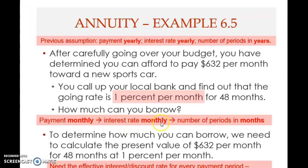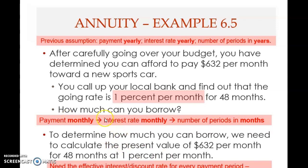The formula we have seen can be applied as long as the three elements — payment, interest rate, and number of periods — are all consistent. They can be months or years, it doesn't matter, but they must be consistent. If one is in months, then the other two must also be in months. In this particular case, they are all consistent.